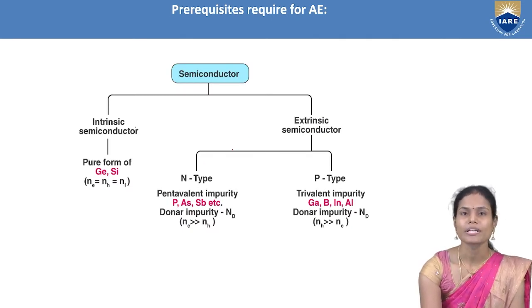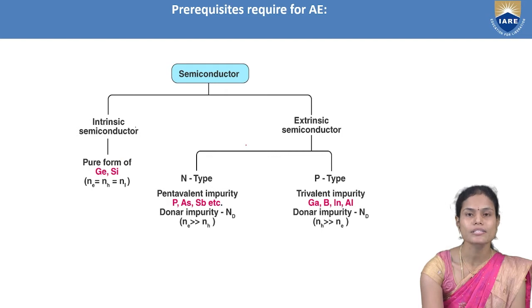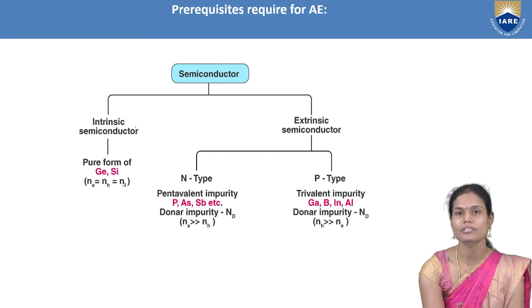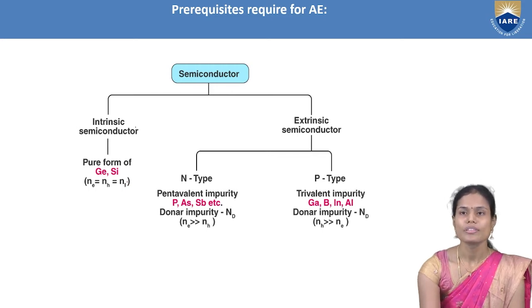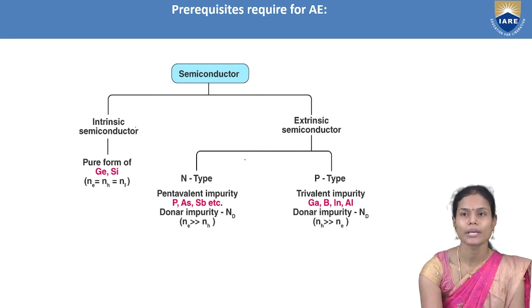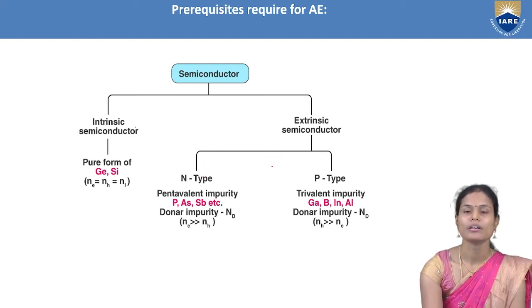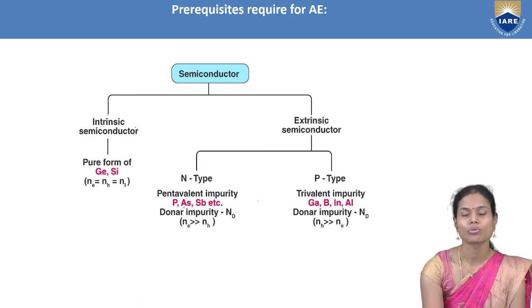Semiconductor materials are available in two types: intrinsic semiconductor and extrinsic semiconductor. Intrinsic semiconductors are the pure form of germanium or silicon materials, where the number of electrons equals the number of holes. Extrinsic semiconductors are of two types: N-type, where electrons are more compared to holes, and P-type, where holes are more compared to electrons.